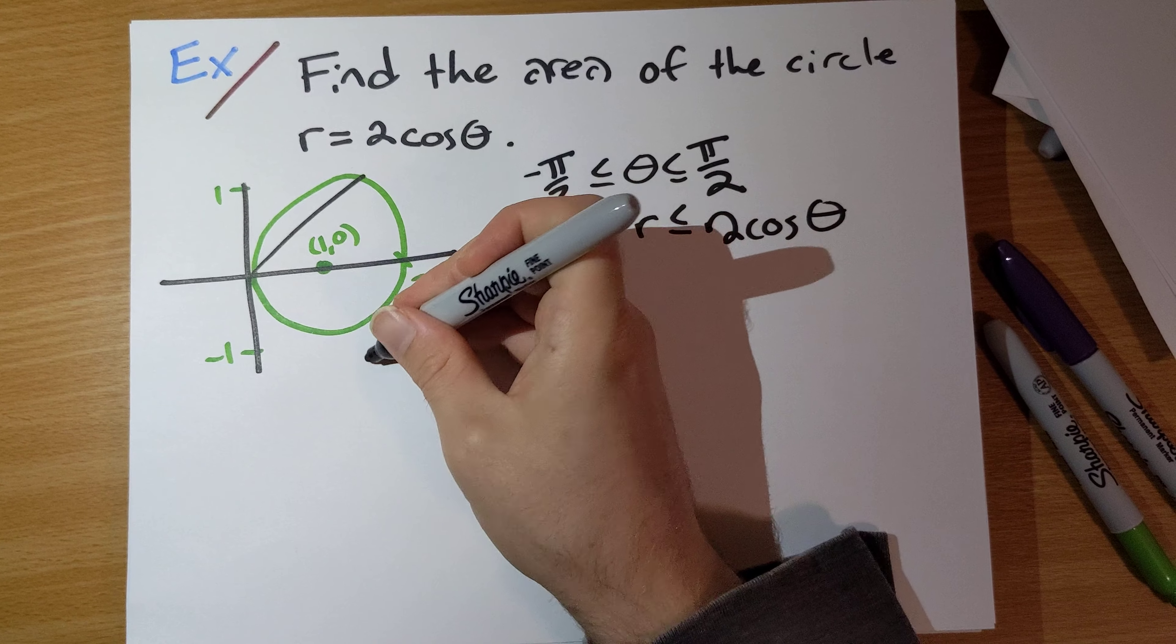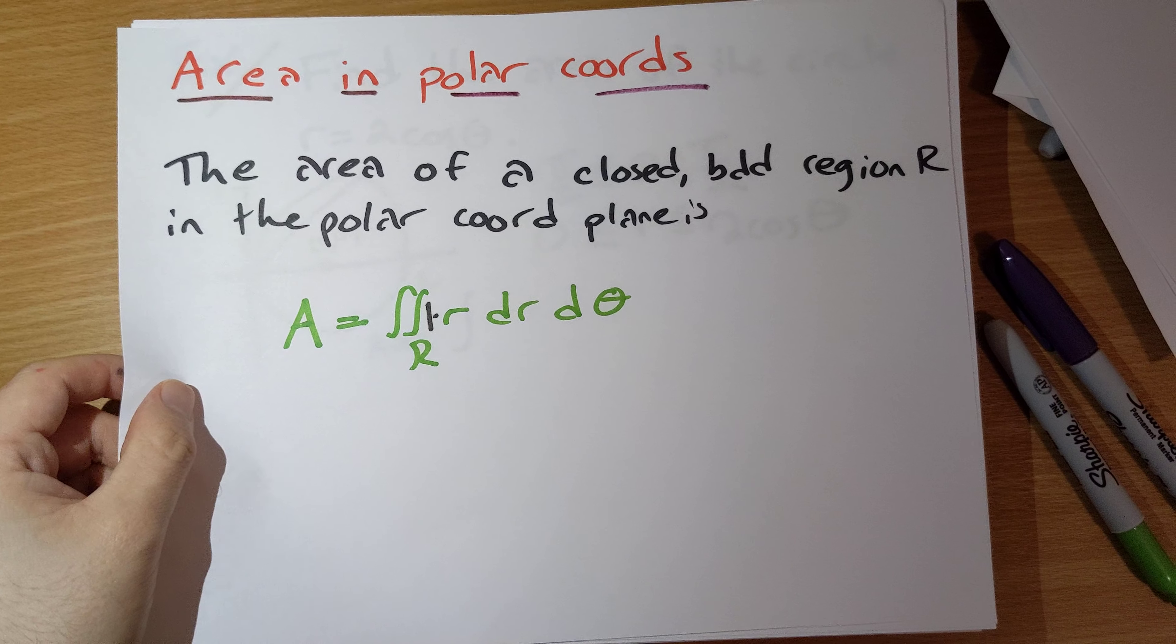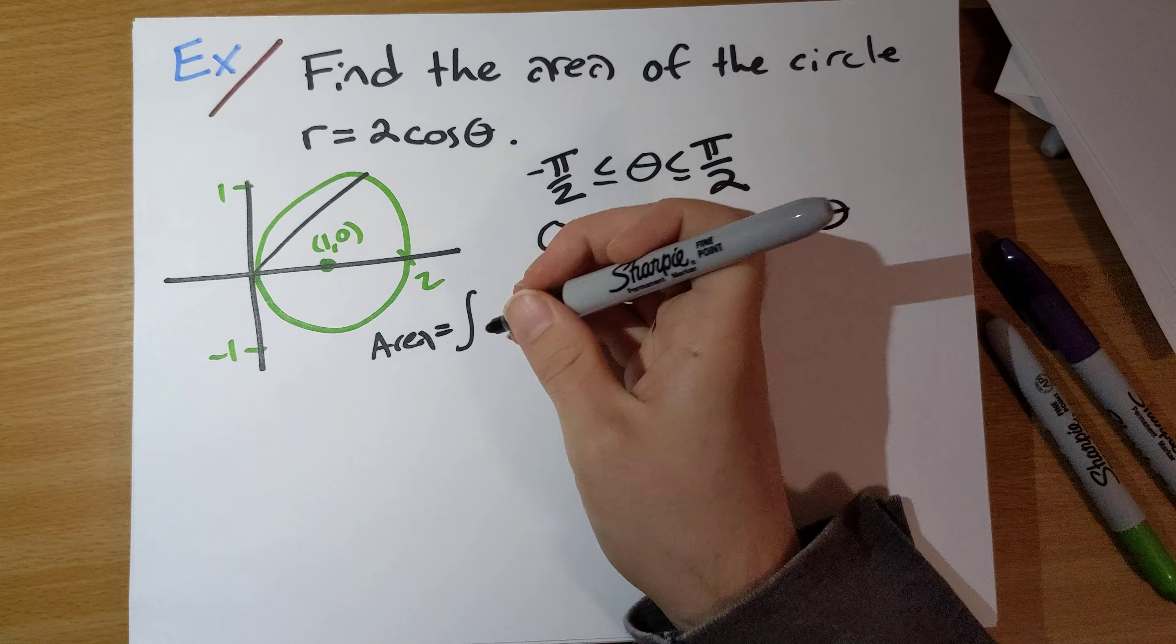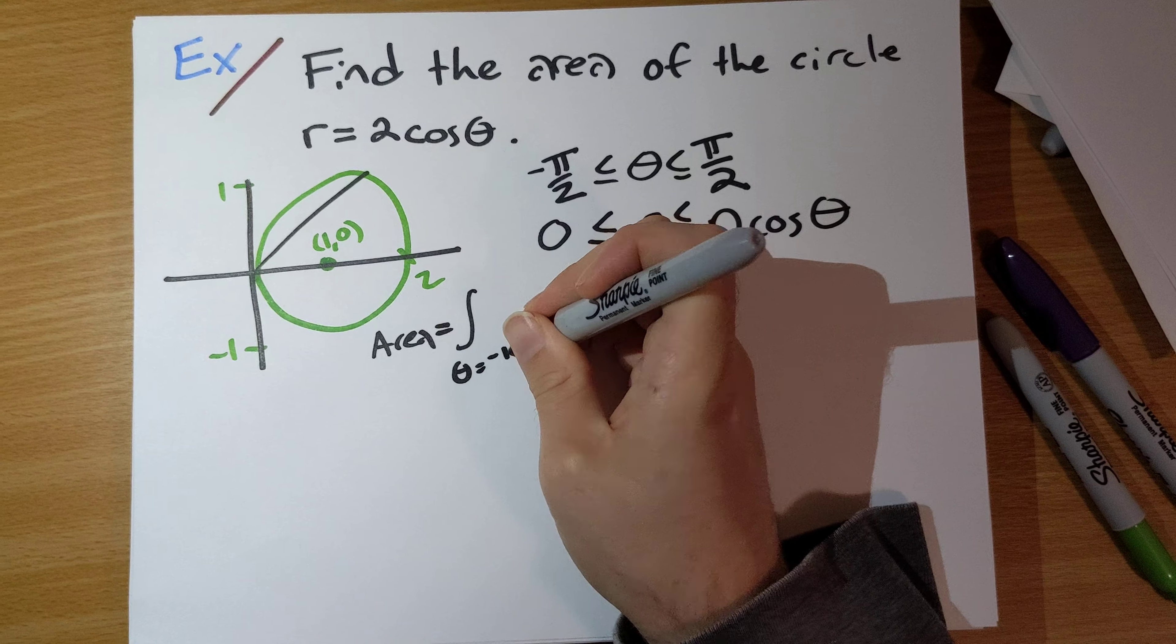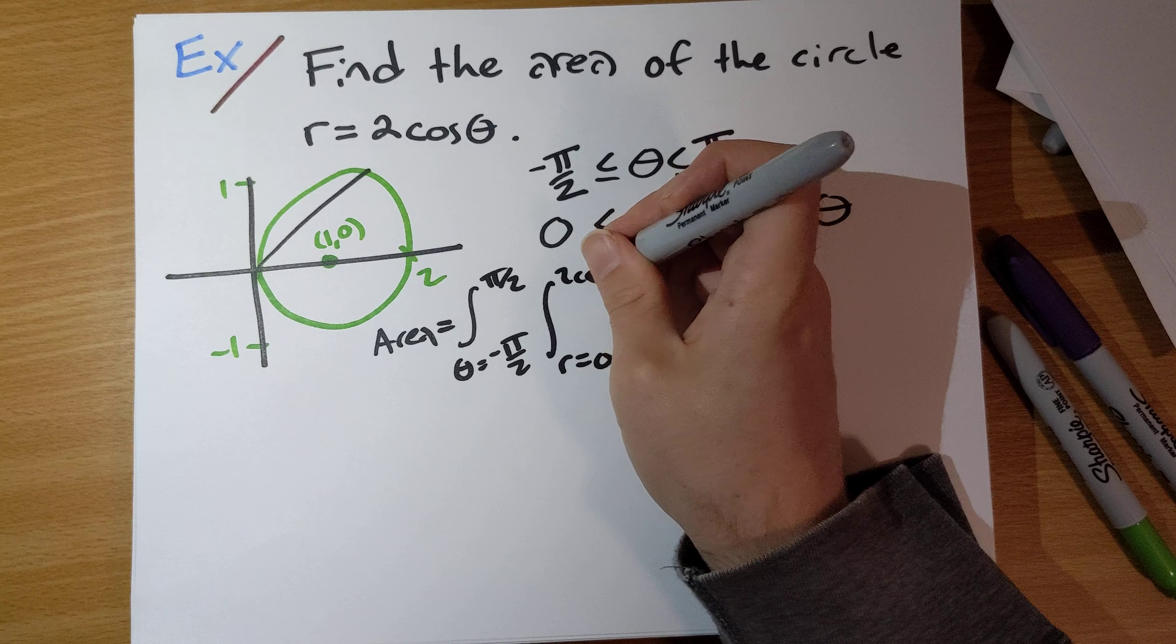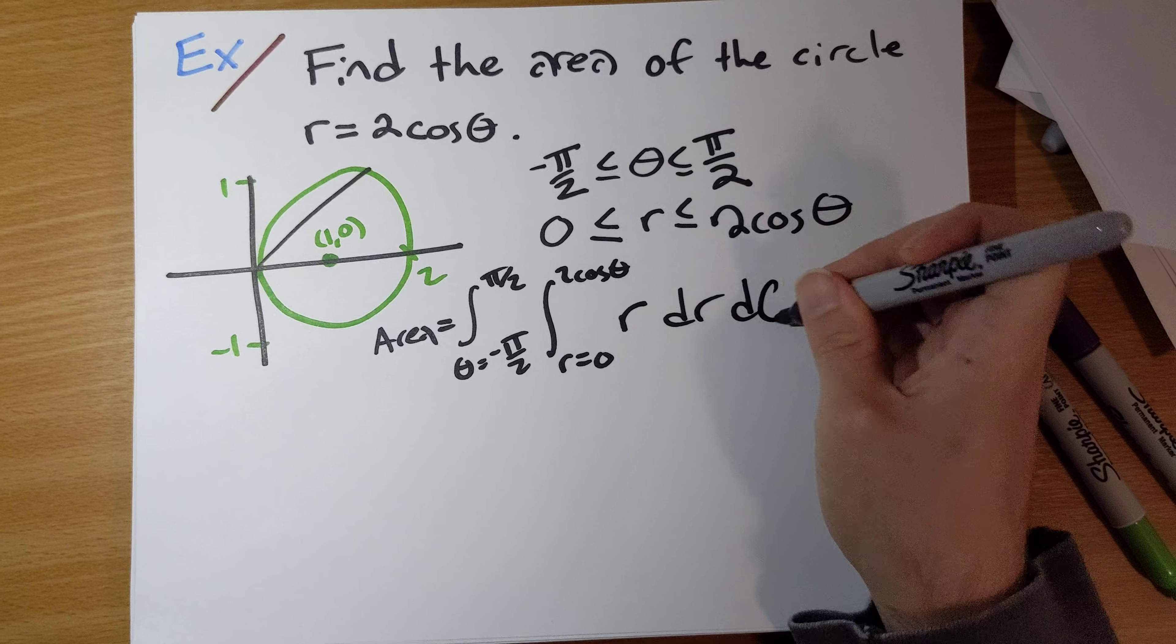Our area using this formula right here. So we're going to integrate θ runs from negative π over 2 to π over 2, r runs from 0 to 2 cosine θ of r dr dθ.